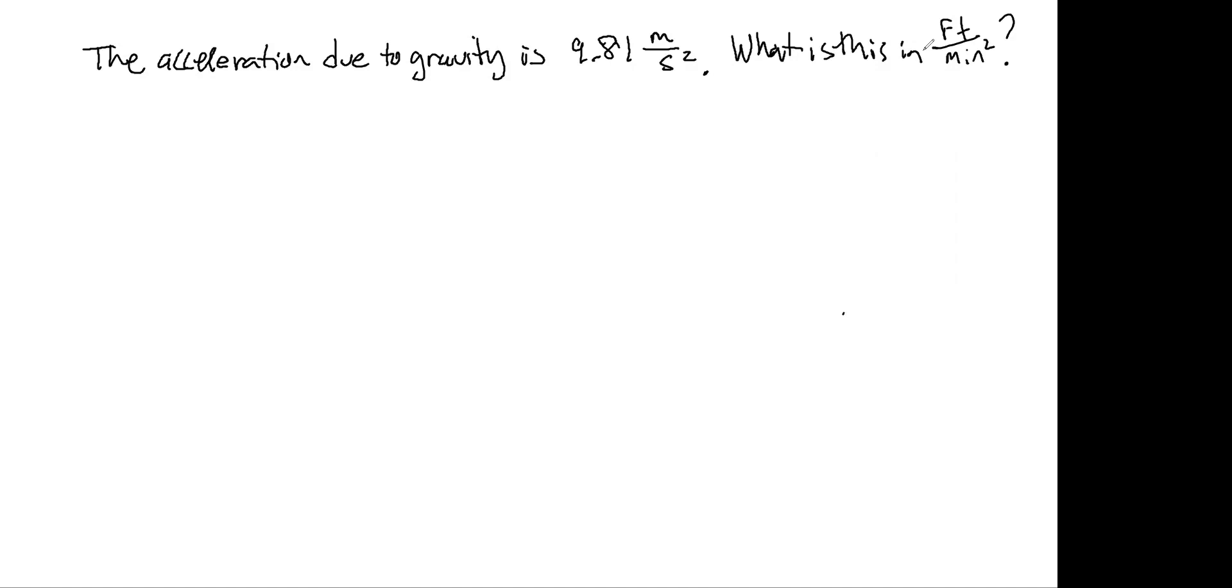So the problem reads: the acceleration due to gravity is 9.81 meters per second squared. Typically acceleration is a distance over time squared. What is this in feet per minute squared?